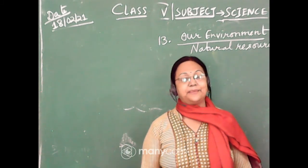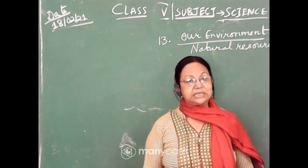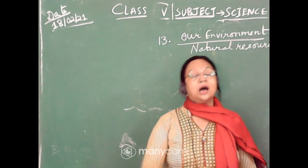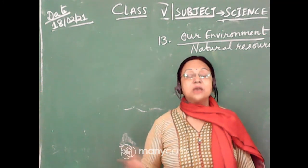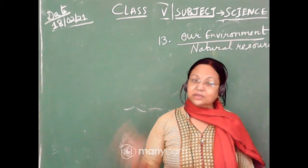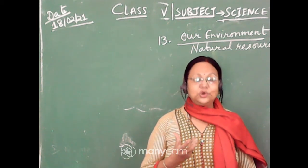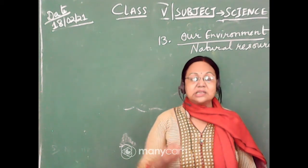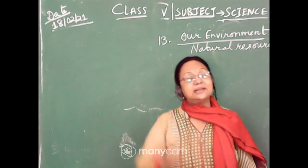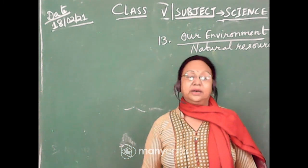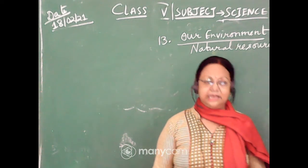Day by day the temperature is increasing. This type of temperature is affecting the entire globe. Globe is the model of the earth, and global warming means the entire world is being affected by this heat. This is called global warming.